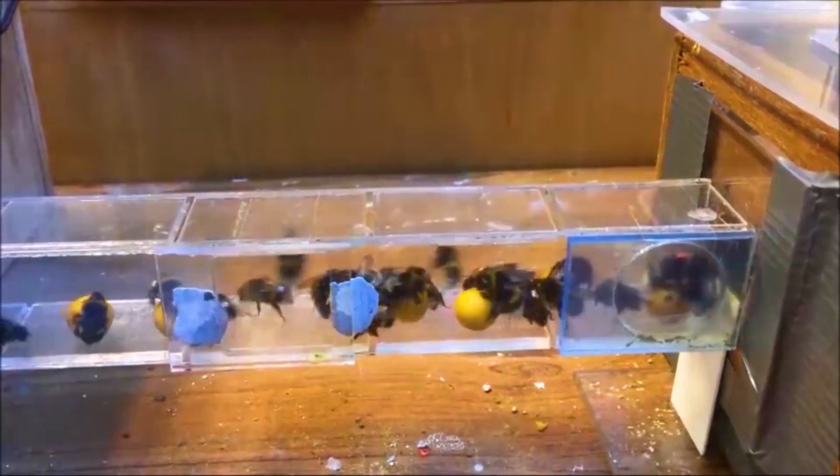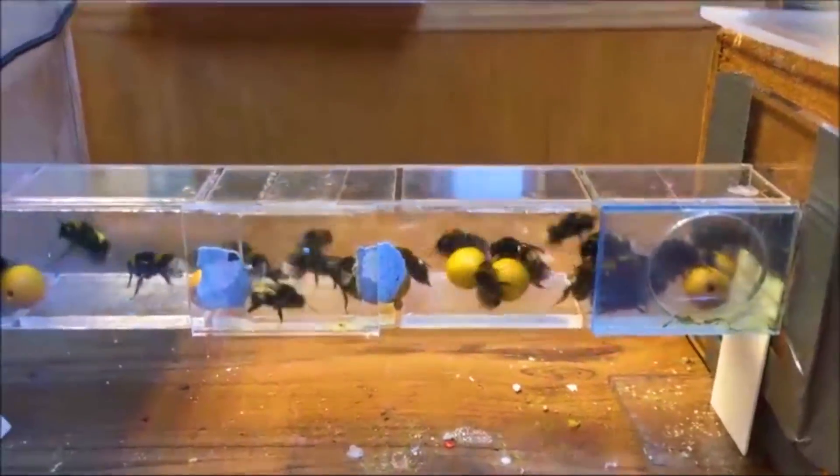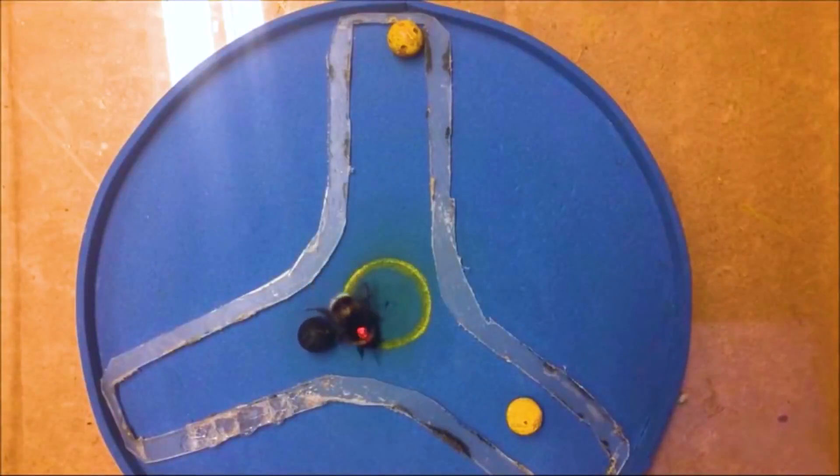Rather than mimicking the conditions they were shown, bees went off script to solve problems. The demonstrations they learned from all involved yellow balls. This ball is black, not yellow.